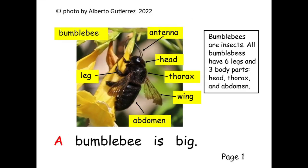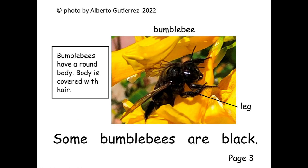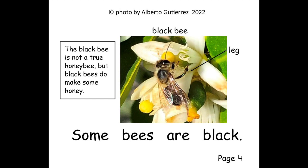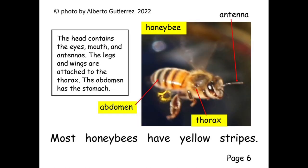A bumblebee is big. A honeybee is small. Some bumblebees are black. Some bees are black. Some bumblebees have a yellow stripe. Most honeybees have yellow stripes.